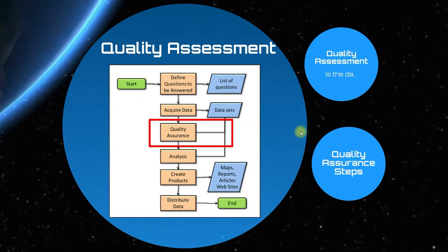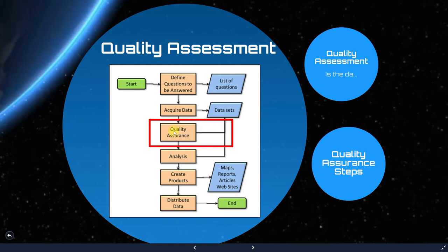Now let's talk about the quality assessment. The GIS workflow goes step by step: first we define the questions to be answered, then we acquire data through datasets, then we do quality assurance and analysis, and finally create products like maps, reports, articles, and websites.